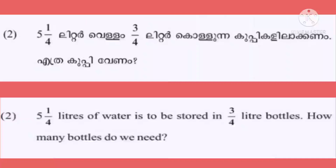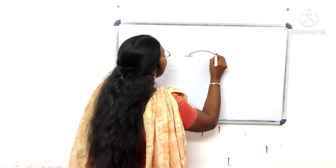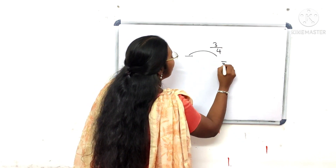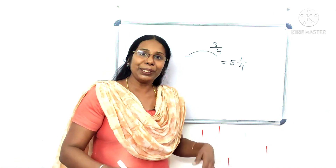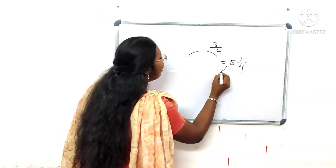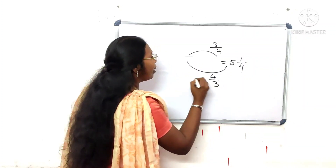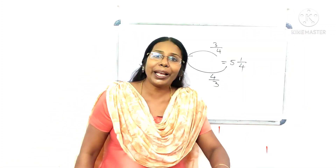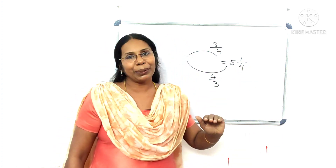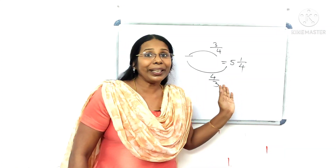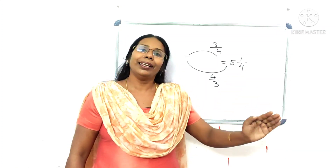5 and a quarter liters of water is to be stored in 3/4-liter bottles. How many bottles do we need? How many bottles are 3/4 meters? This is how we do the trick. We will do the steps.